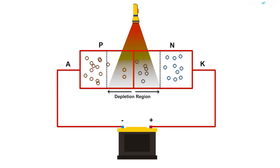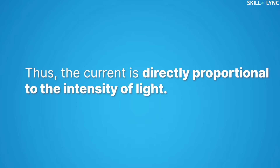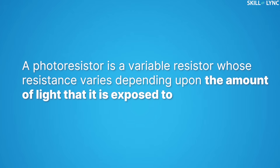The holes move toward the p-junction and the electrons move towards the n-junction. This leads to the generation of charges which contribute to the flow of current. Thus, the amount of current produced is directly proportional to the intensity of light.